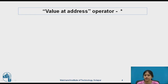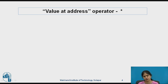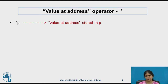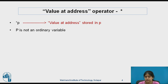To understand pointers in C, we must get acquainted with another operator — the star (*). When we do arithmetic in a program, star is a multiplication operator, but it has another meaning according to context. It stands for the value-at-address operator, also called the indirection operator. If I write *p, it means value at the address stored in p. So p is capable of storing a memory address, which means p is not an ordinary variable like x.